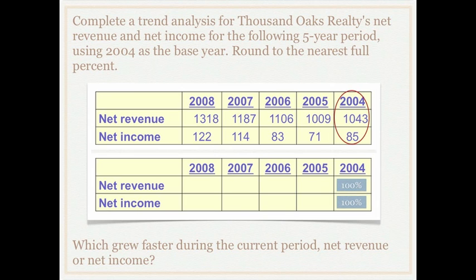If revenue is 1,043 divided by 1,043, that equals 1, or 100 percent. Now we want to see how it grew in 2005. We take net revenue of 1,009 and divide that by the base year revenue of 1,043. We find that revenues in 2005 are 97 percent of what they were in 2004, telling us that revenues fell by 3 percent.